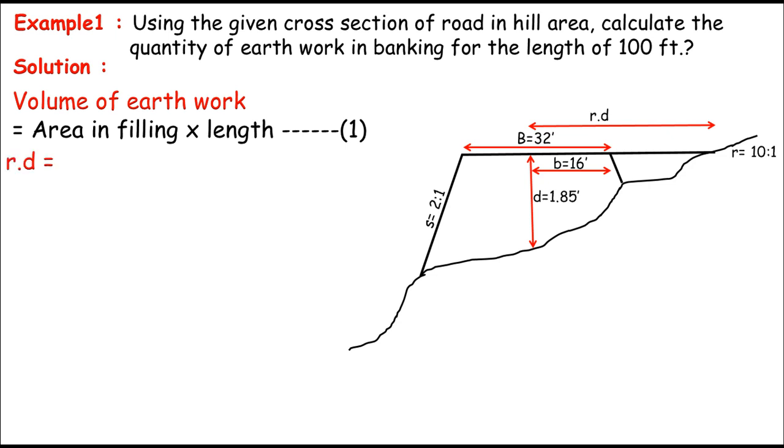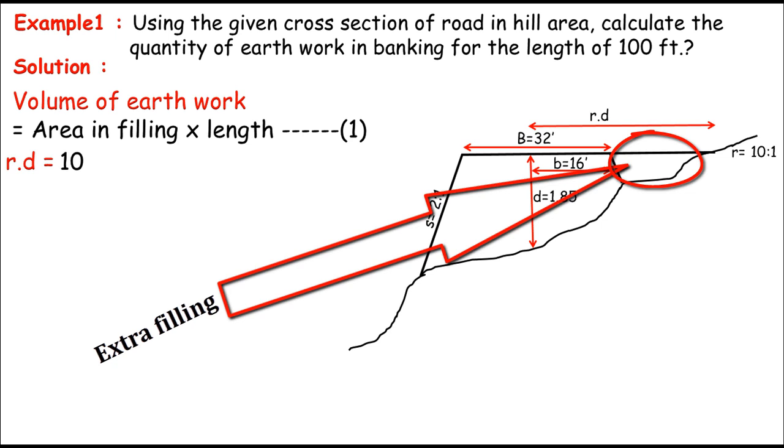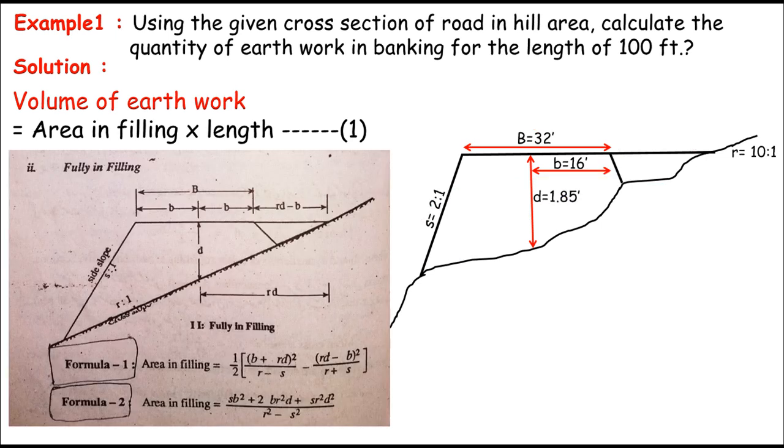Rd is just the distance from the half breadth or from the center of the formation width to the cross slope, just like in this form. So Rd equals R is known, that's 10 and 1, so 10 times depth. That is known over here, 1.85 feet. When you multiply these two, 10 times 1.85 will get 18.5 feet is Rd. So if you see, this is just greater than the half formation width of the road, which is 16 feet over here. So this section is fully in filling. That's proof over here and extra filling will be subtracted, which means we'll use this first formula over here.